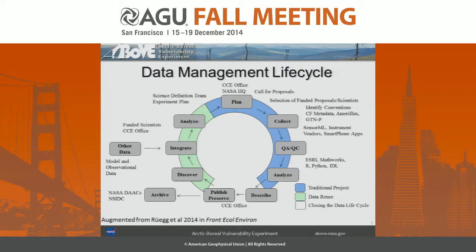The selections, everything from getting selected, then collecting the data, QC-ing the data, analyzing the data. The idea is, if you have created science data that others can use, you're going to publish that in an archive — say, a DAC. We also have a feedback loop, so we can get back in. Using the system we're setting up, it'll allow new observations to be pumped back into the campaign's effort so scientists can use it right away.